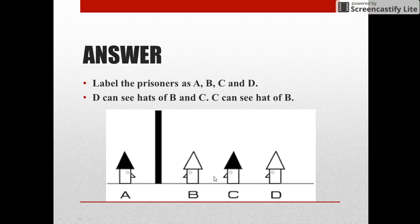B, C, and D are standing in a line. Now D can see the hats of both B and C, but C can see only the hat of B.